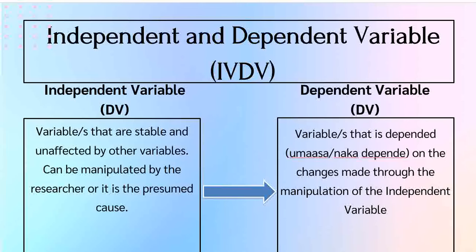Whereas kapag sinabi naman nating dependent variables, ito yung mga umaasa, yung mga variables na nakadepende sa magiging resulta ng pag-aaral natin, o pag ma-manipulate natin ang ating independent variables. Ibig sabihin, walang dependent variable kung walang independent variable. Yung dependent variable, ano yung mga magiging resulta ng mga aaralan natin sa ating independent variable — yun ang magiging dependent variable natin.